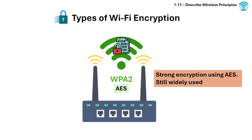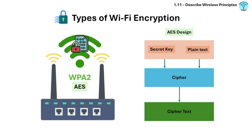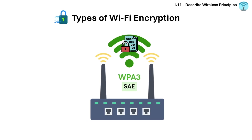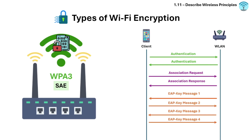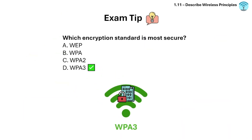AES is a widely used symmetric encryption algorithm for securing data and is considered robust and secure for encrypting and decrypting information. WPA3 is the latest and most secure standard, using SAE (Simultaneous Authentication of Equals) — a password-based authentication and key establishment protocol that provides enhanced protection against dictionary attacks. Exam tip: if asked to choose the most secure wireless encryption, the answer is WPA3 if available, or WPA2 with AES.